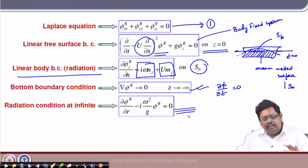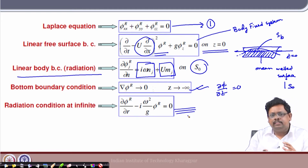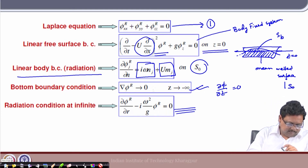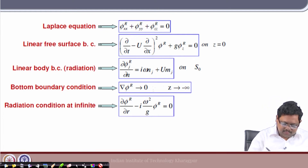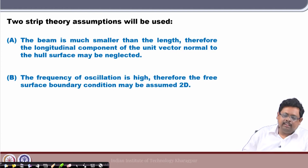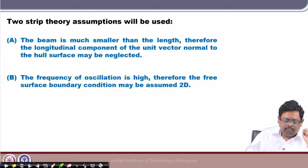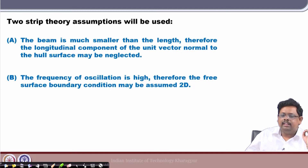This formulation is for the three-dimensional body. However, we need to do some simplification by assuming something. The assumptions we are making are: first, the beam is much smaller than the length; therefore, the longitudinal component of the unit normal vector to the hull surface may be neglected. So, the variation along the x-axis is not that important.